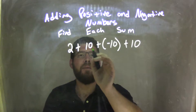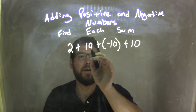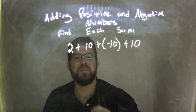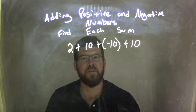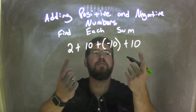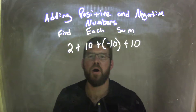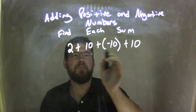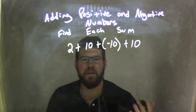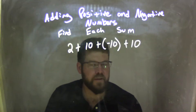So I'm actually going to combine the 10 plus the negative 10 first. I'm going to leave these two on the outside where they are. So 10 plus negative 10 — well, that's easy. That's 0.